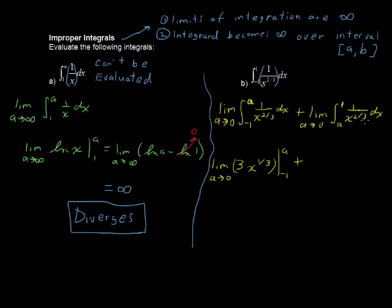evaluated from negative 1 to a, plus this is actually the exact same antiderivative. But we have a limit again as a approaches 0. 3 times x to the 1 third, evaluated from a this time to positive 1. So we have these same numbers represented by this letter a.